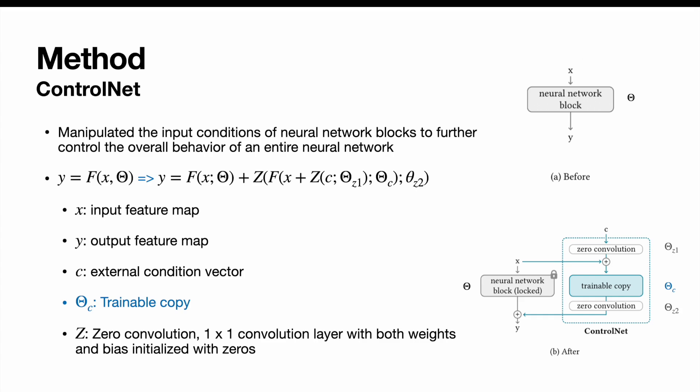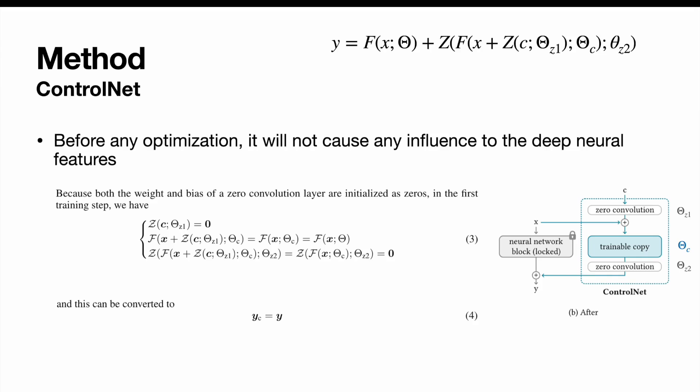The neural network blocks are connected by a unique type of convolution layer called zero convolution, which is 1x1 convolution layer with both weights and biases initialized with zeros. Since both weights and biases of zero convolution are initialized with zeros, before any optimization, the output of the ControlNet part is equal to zero. Thus, it will not cause any influence on the deep neural features.